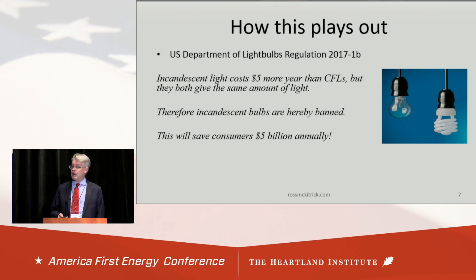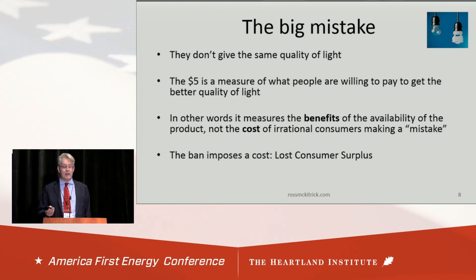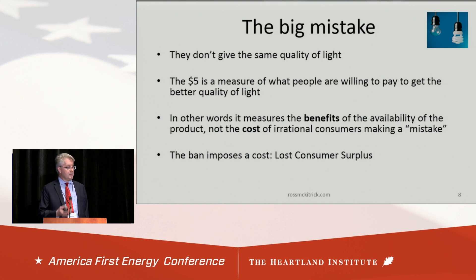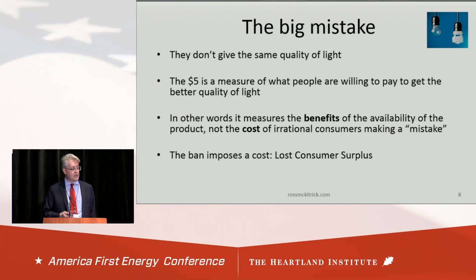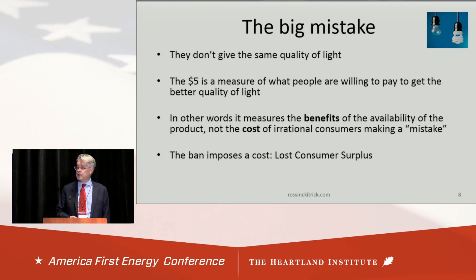It's the same problem here. That $5 represents someone's willingness to pay for a better quality of light. It might be that the engineers in the Department of Energy can't tell or don't care about the difference in the quality of light, but it's not their decision to make. That $5 is a measure of what people are willing to pay to get the quality of light from an incandescent bulb as opposed to a CFL bulb. So it's a measure of the benefit of the availability of the product, not a cost of an irrational mistake. By banning the better product, they're actually imposing a cost on consumers — namely the loss of consumer surplus.